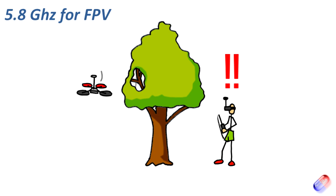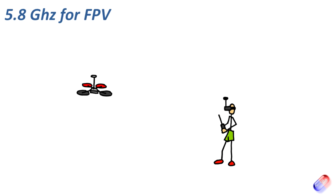If you get a tree, a wall, or anything between you and the craft, you will get video dropout — and even worse, you might lose the video altogether. In that situation, the best thing to do is increase the throttle and rise above the obstruction to get the video back, pick up orientation, and fly it back home. Or you hit the throttle and flick the return-to-home switch so the model clears the obstruction, comes back to where you can pick up video, and you take control again and continue the flight.